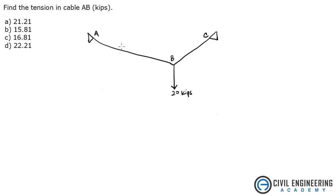So we're given the system, the cable system with a load on it of 20 kips, and they want us to know what the tension is in AB. We're also given slopes. This is a 1 to 3 slope, and this is a 1 to 1 slope.